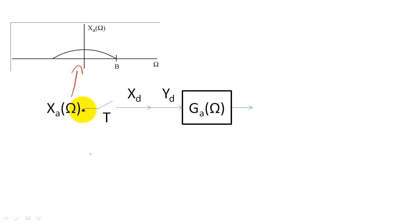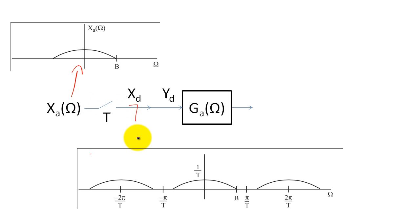When we sample X of t, X of n will have the following Fourier transform that is scaled and replicated. As a quick side note, since we are plotting X of d and Y sub d on analog frequencies, we need to divide our digital frequencies by t.